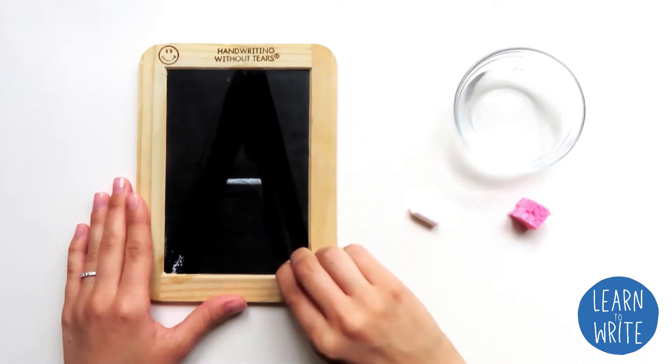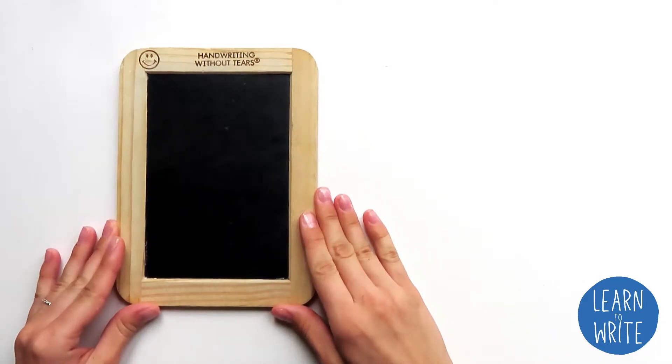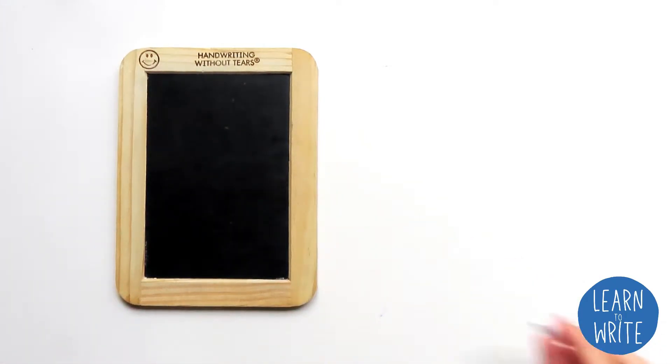Let's take a minute to see what we're going to need. First, we're going to need our Wet-Dry-Try Board. We're also going to need a piece of chalk, two small sponges, and a little cup of water.